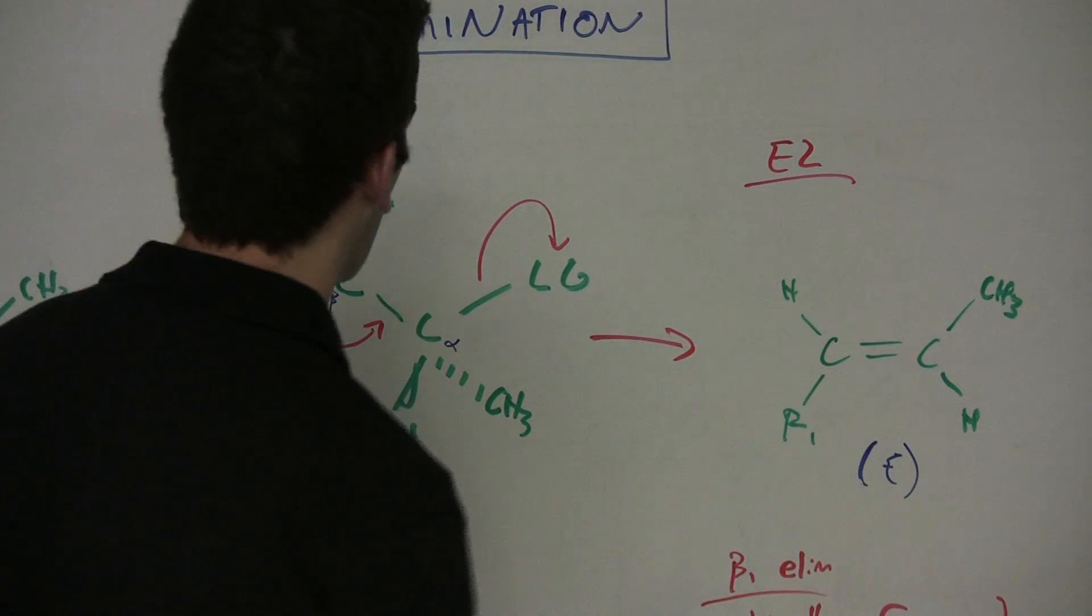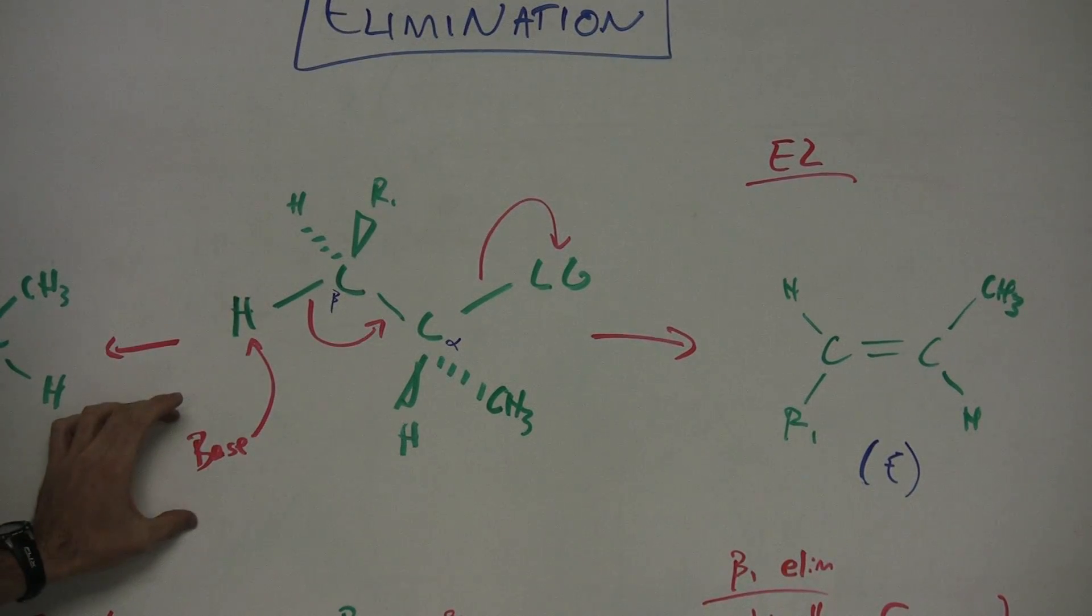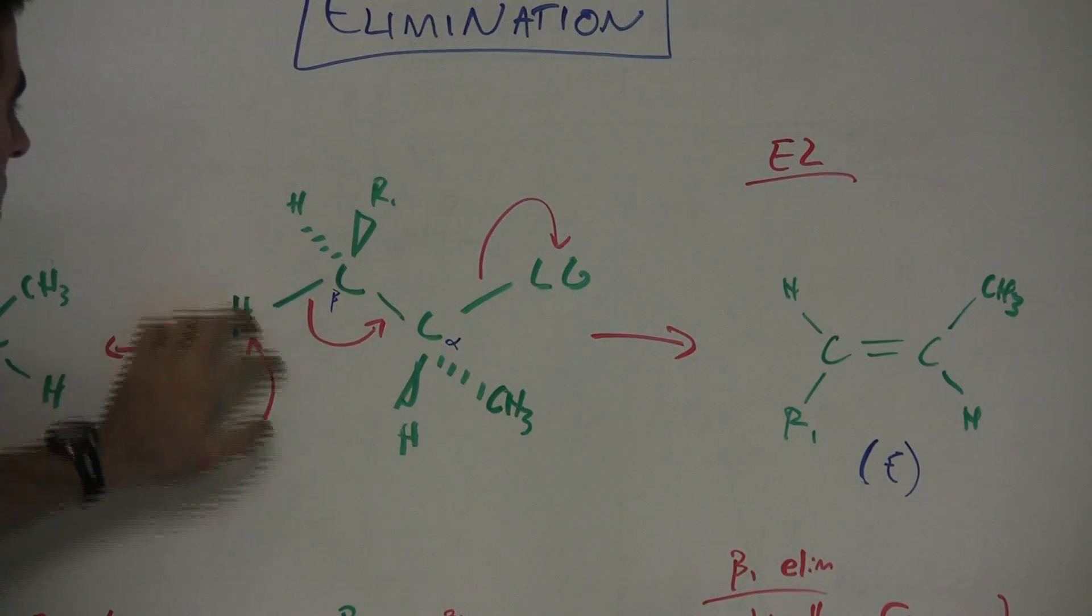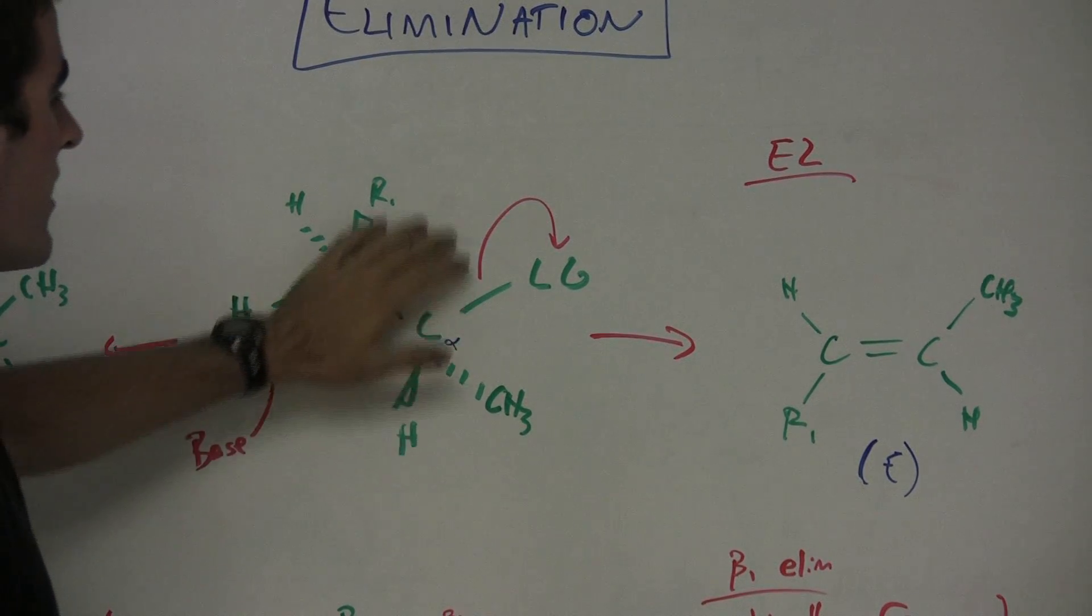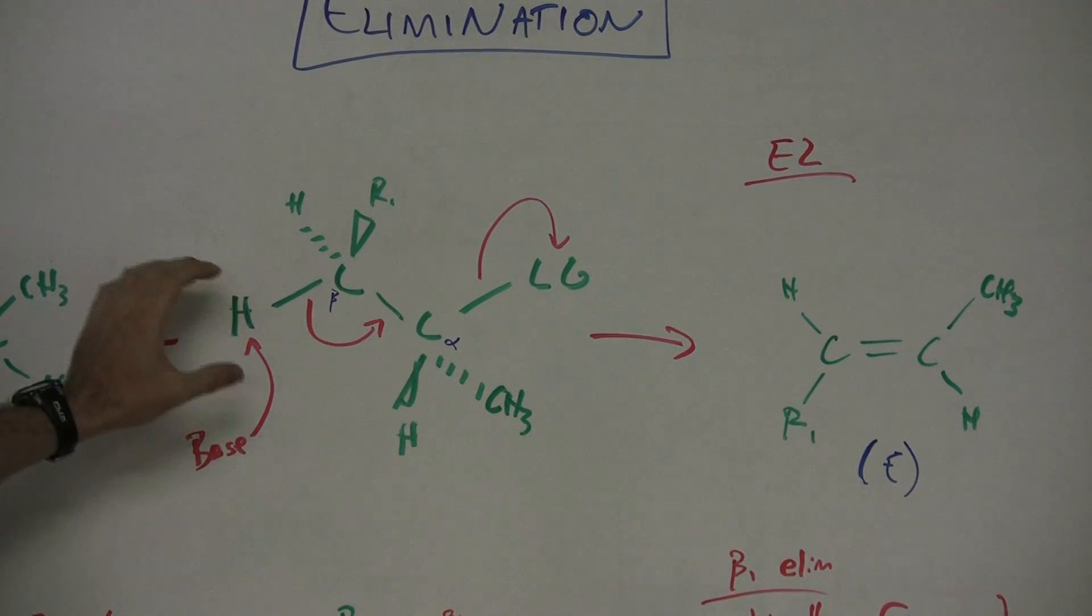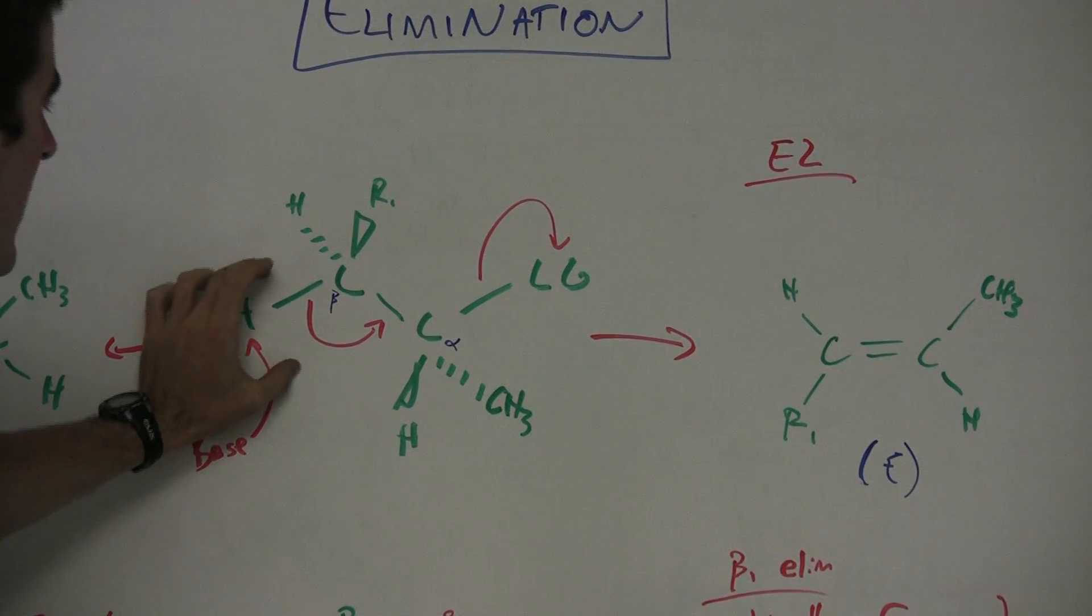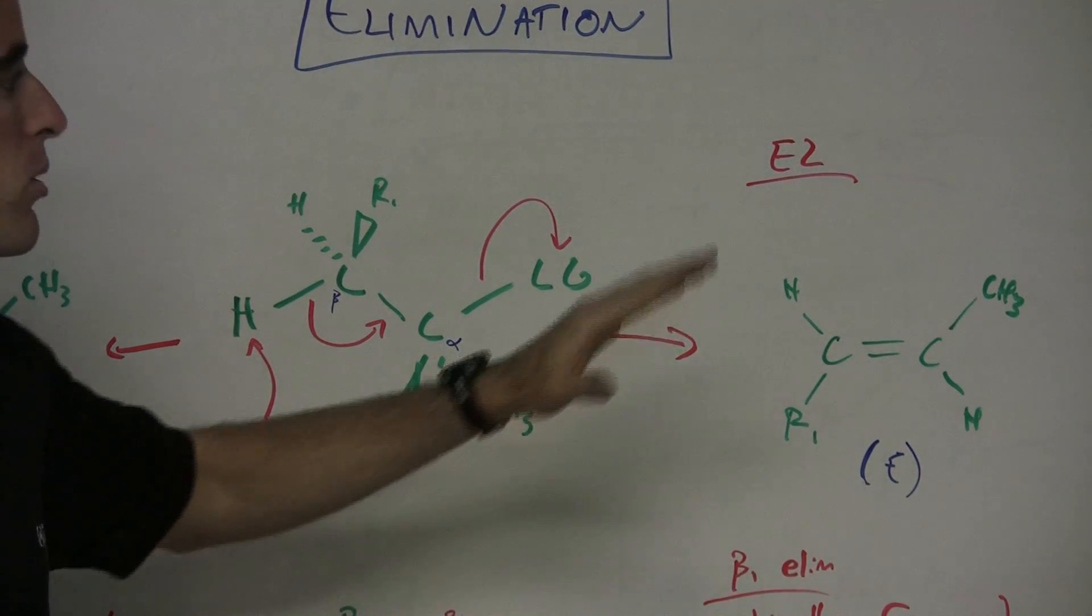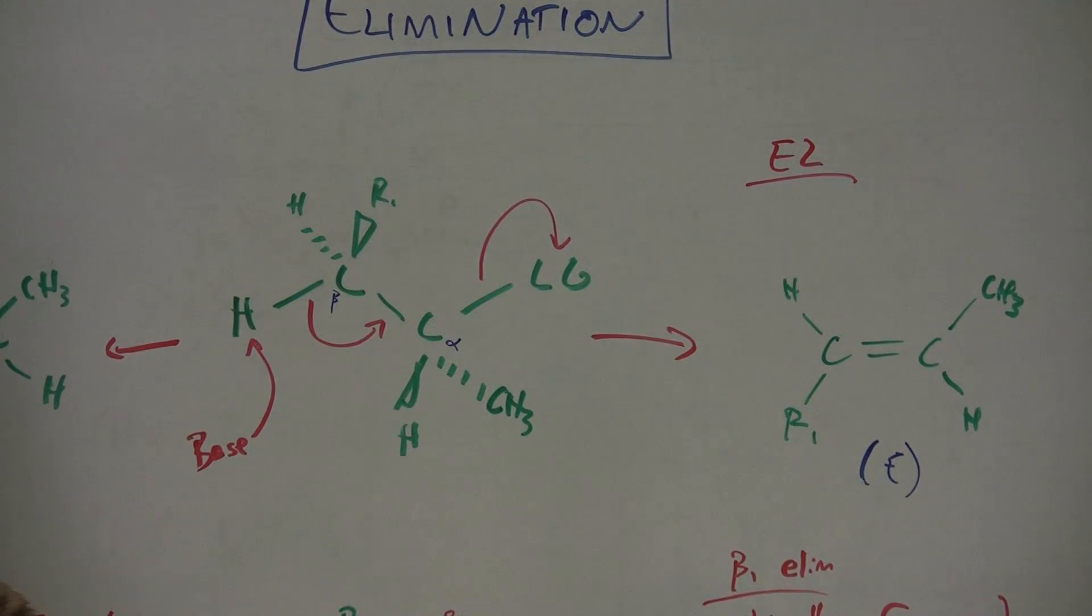So if we look at E2 first, we're going to see that the base is going to come in, take the beta hydrogen off from the beta carbon, the double bond is going to form, and simultaneously kick off that leaving group. Now in the mechanism that happens down here, you'll notice that the H that's being taken off is kind of anti-planar to the leaving group here, and I'll explain more in-depth what that means with these considerations over here.